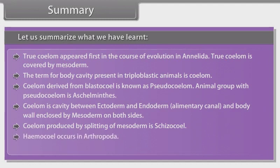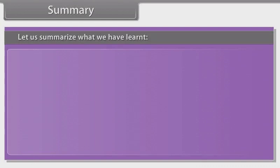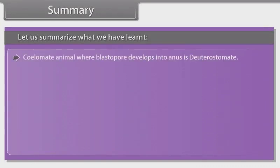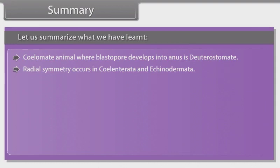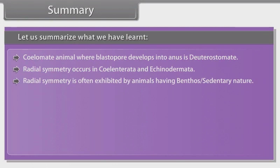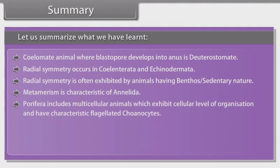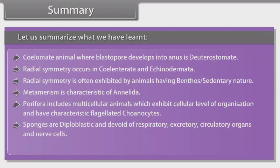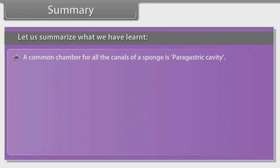Haemocoelom occurs in Arthropoda. An enterocoelomate in the vertebrate group is Echinodermata. A coelomate animal where the blastopore develops into the anus is called a deuterostomate. Radial symmetry occurs in Coelenterata and Echinodermata. Radial symmetry is often exhibited by animals of a benthic or sedentary nature. Metamerism is characteristic of Annelida. Porifera includes multicellular animals which exhibit cellular level of organization and have characteristic flagellated choanocytes. Sponges are diploblastic and devoid of respiratory, excretory and circulatory organs and nerve cells. The canal system is found in sponges.